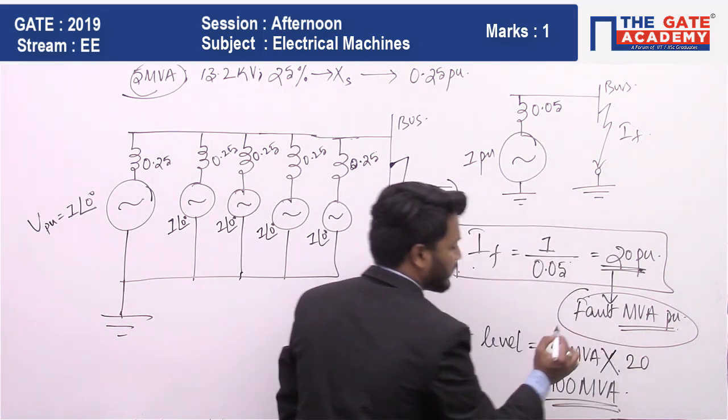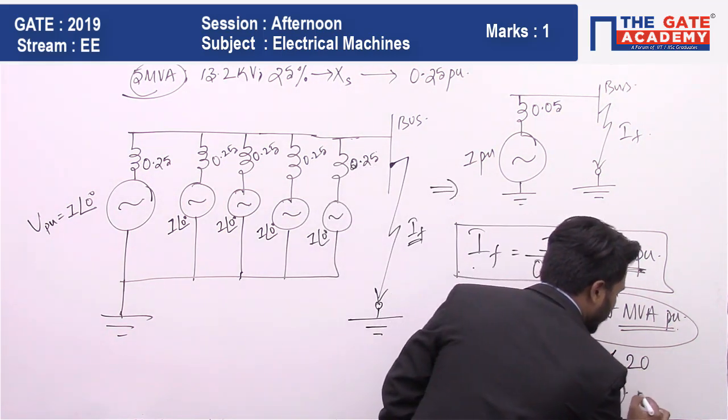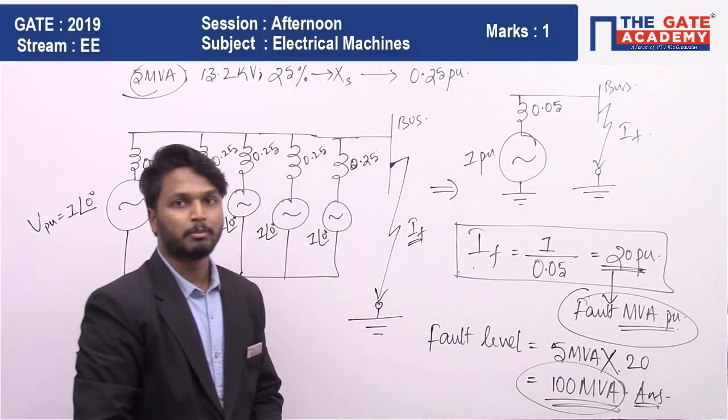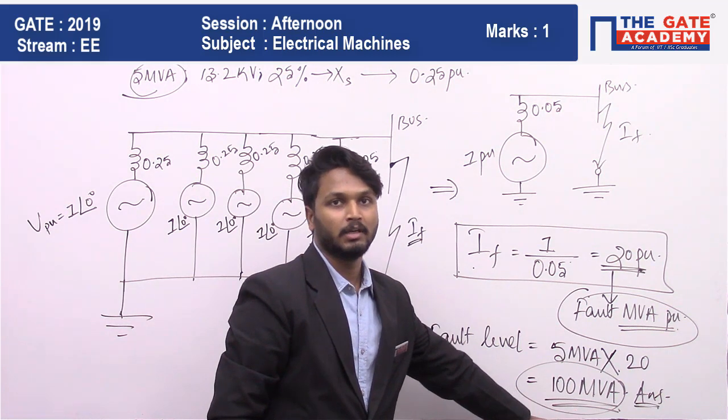Therefore, the correct answer for this question is 100 MVA. Fault level at the bus bar is nothing but 100 MVA.